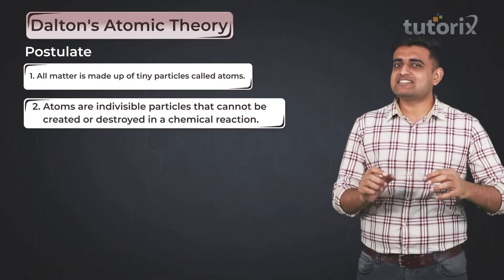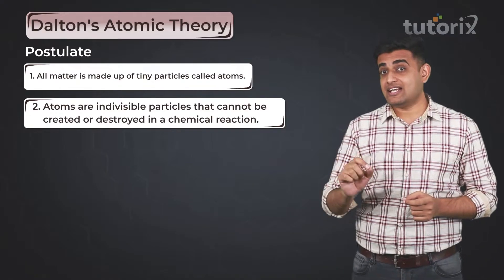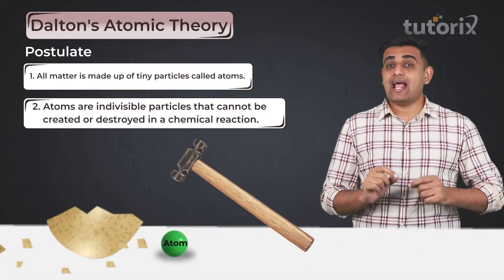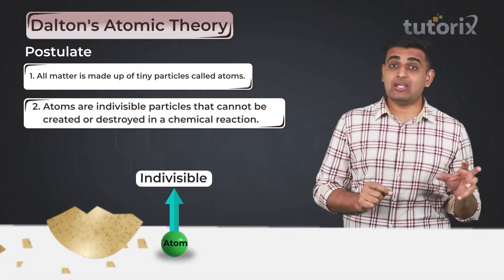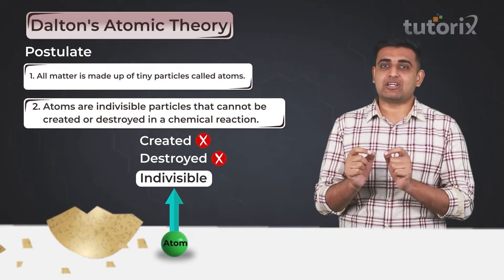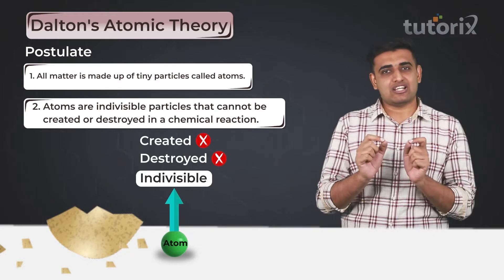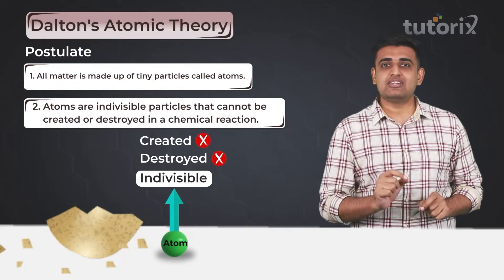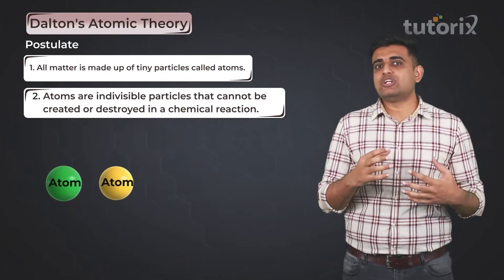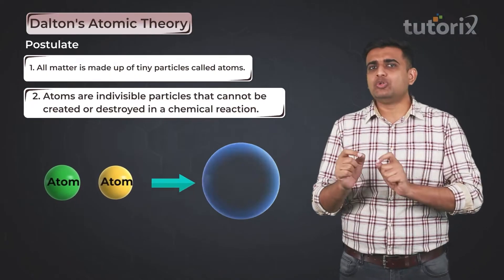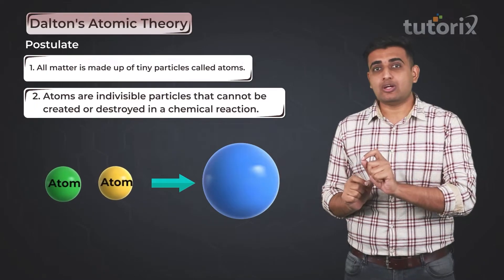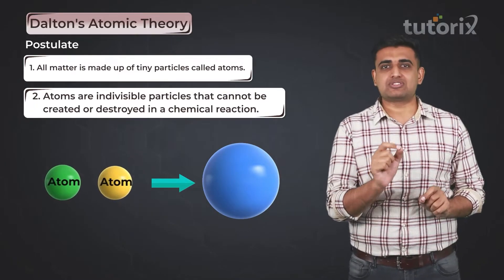In the second postulate, Dalton explains that an atom is indivisible — it can't be created or destroyed in a chemical reaction. Atoms are the fundamental units; dividing them further is not possible. However, two or more atoms may combine to form a new unit, but no new atom will be created and the existing ones will not be destroyed.